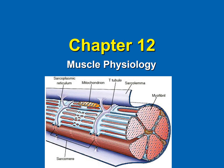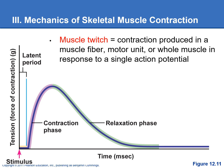We're going to take a look at muscle twitches. A muscle twitch is a contraction produced in a muscle fiber, motor unit, or whole muscle in response to a single action potential. If we look at the graph on the bottom, it shows a muscle twitch. We've got time on the x-axis, and on the y-axis we've got the tension or force produced by the contraction. Notice that when we stimulate the muscle to contract, there is a latent period before any force or tension is produced.